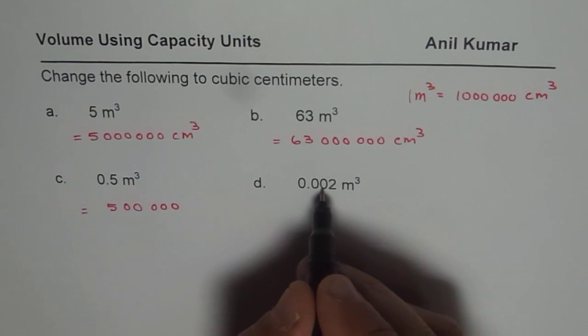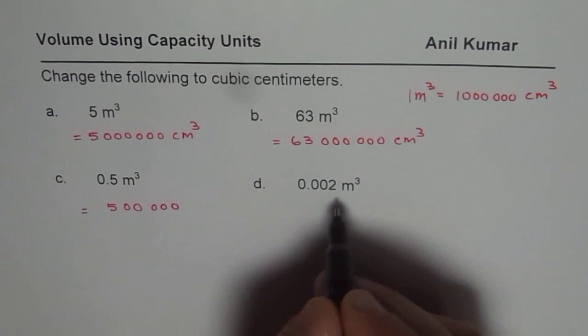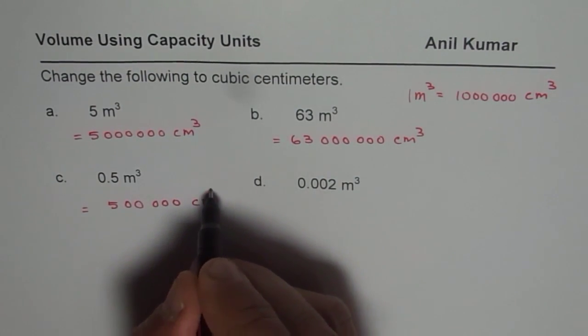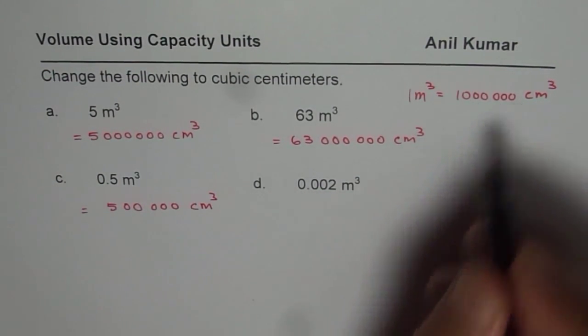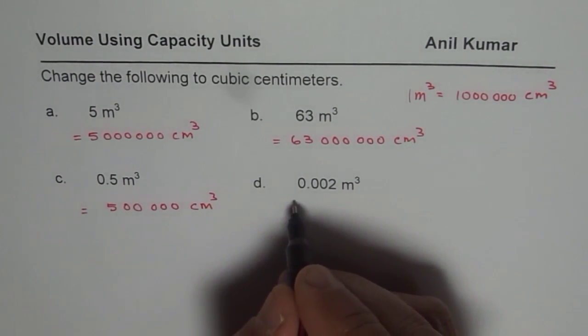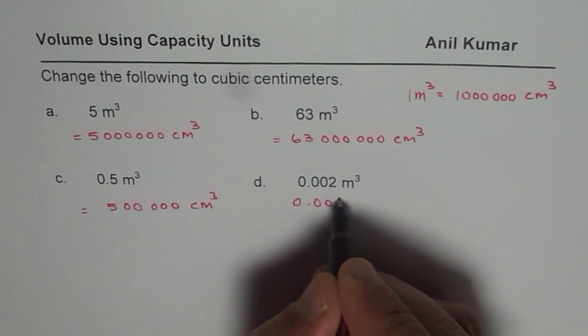This is 0.002 meter cube. To get this as centimeter cube, we need to multiply it by 1,000,000. Let's write down and see how many zeros we get.